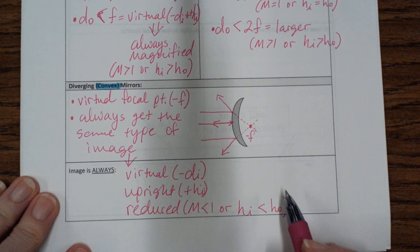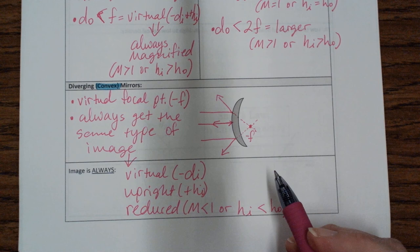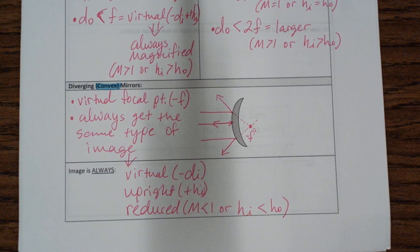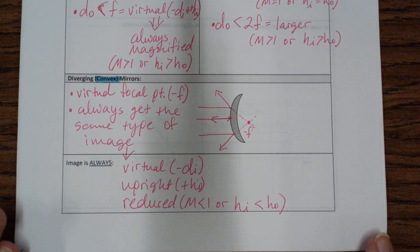Think of a convex mirror as the side rear-view mirror on a car, or the wide-angle mirrors in parking garages that let you see around corners. I'll post another video with example problems, and then you're free to start your homework. Good luck and have a great day!